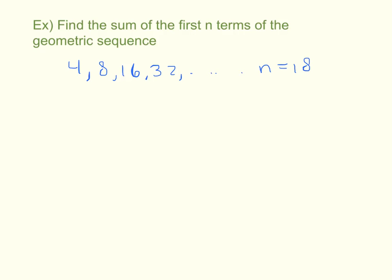This is easy now because I know from my formula that the sum of the first 18 terms is going to equal my first term, which is 4, times 1 minus, my r value is, well, it looks like I'm timesing by 2 every time. So that's 2 to the n. And I'm dividing by my 1 minus r.